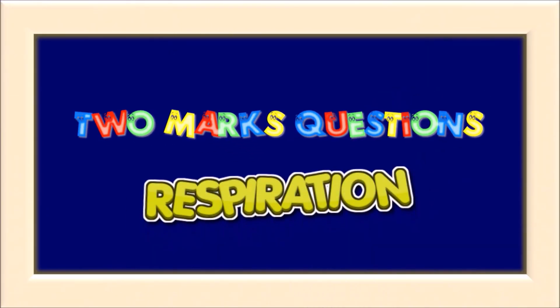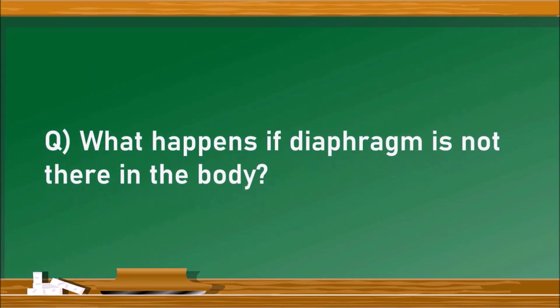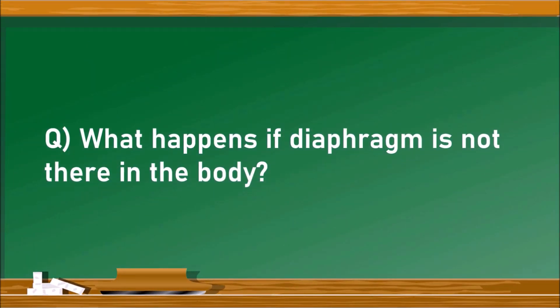2-mark questions from the chapter respiration. The first question is: what happens if the diaphragm is not there in the body? The diaphragm is a muscular structure located just below the lungs.